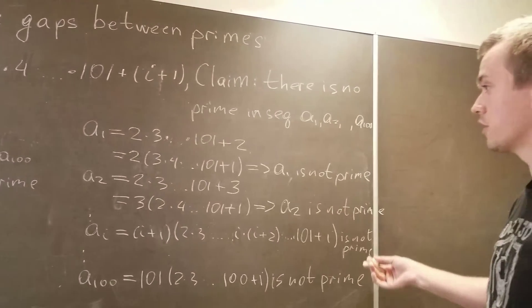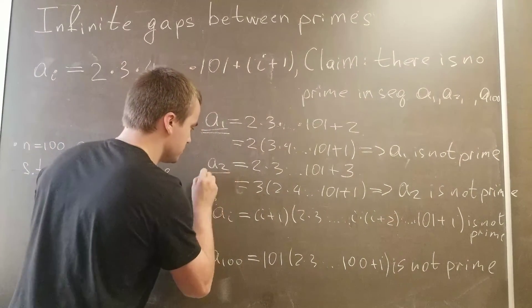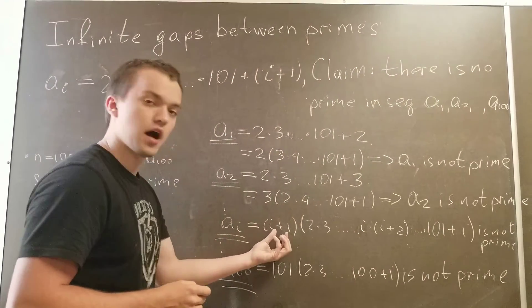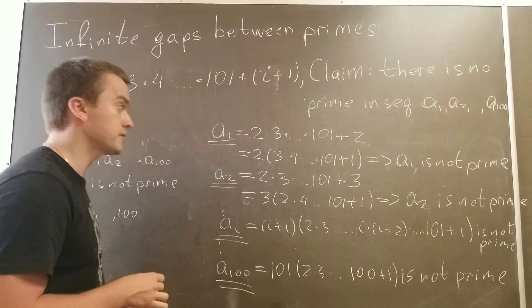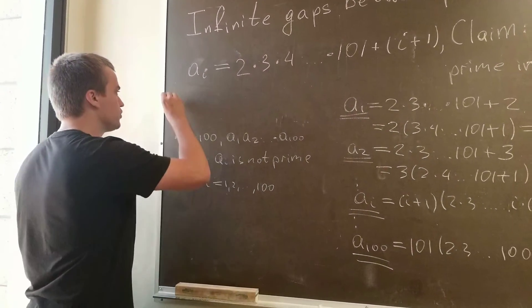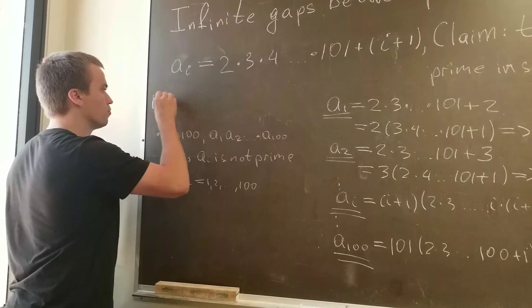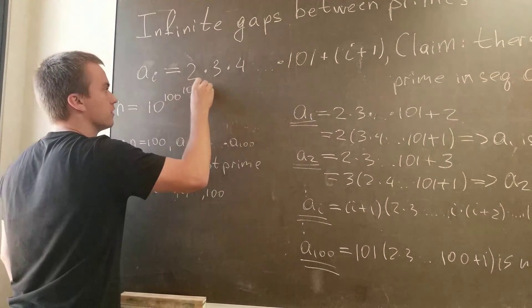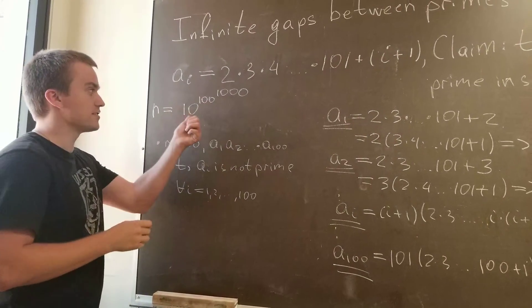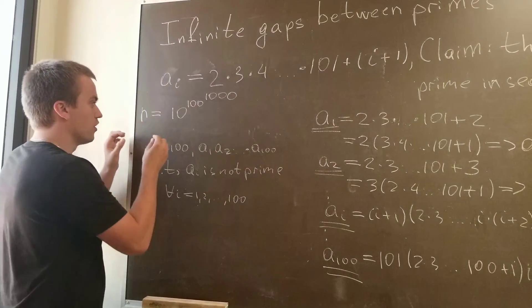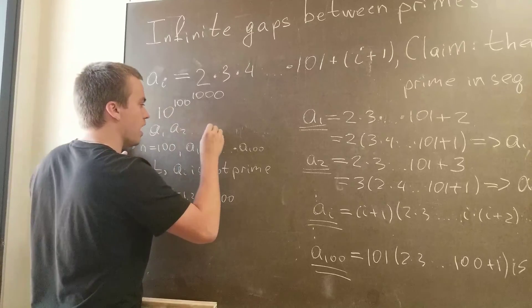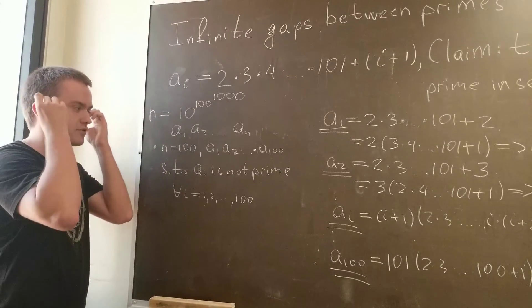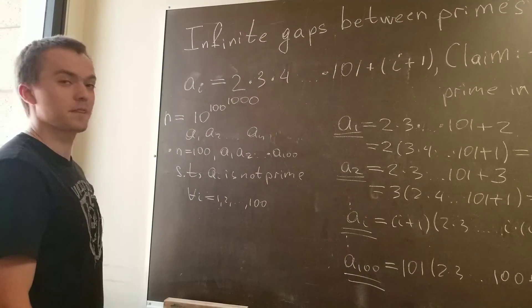And that's it, we are done. We showed that each of these numbers is not prime. Why? Because for each of these numbers I can factor out i plus 1. And I think this is really cool. So basically what I'm saying is you can choose number n to be equal to 10 to the 100, or 1000, and for this you can find the sequence a_1, a_2, up to a_n such that there's going to be no prime in the sequence. It's crazy, it's super cool. Thank you for watching.